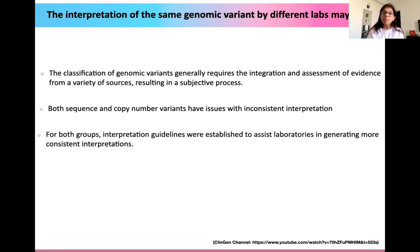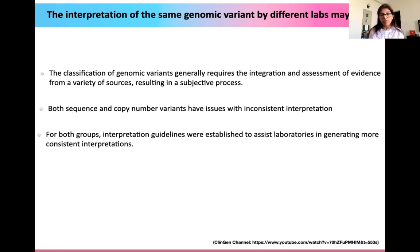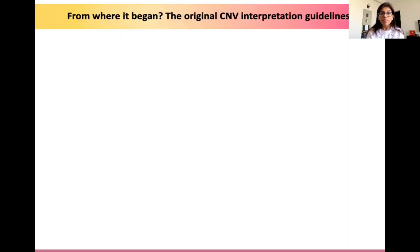For both groups — sequence number and copy number variant variants — interpretation guidelines were established to assist laboratories in having a general and consistent interpretation across labs. So from where did it begin?